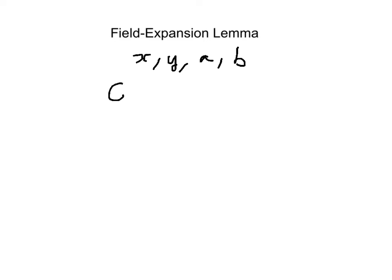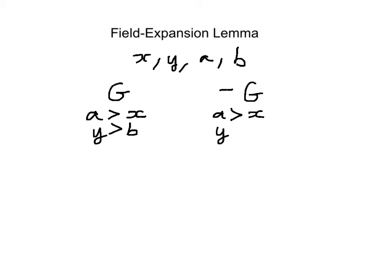We have the members of a group G and then the rest of people, not G. By unrestricted domain, we can assume particular individual preferences. Let's assume that everyone in G ranks A preferred to X and Y preferred to B, and that every member in not G also holds A over X and Y over B. Regarding all other pairs, we could have any particular individual configurations of preferences.